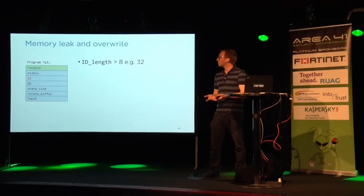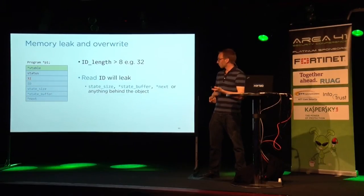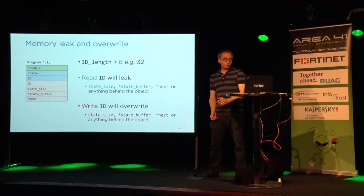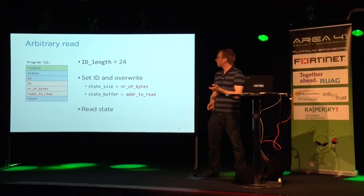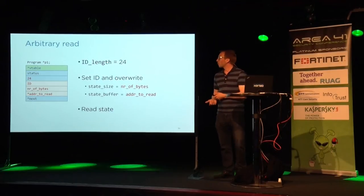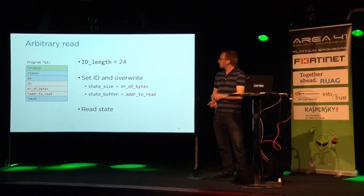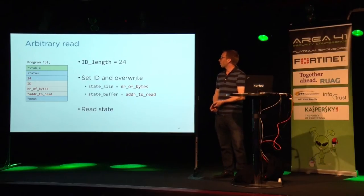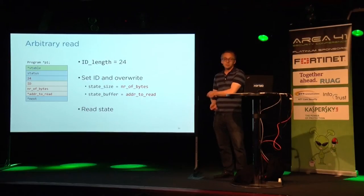How do we leak memory? We could set the ID length to 32, which would allow us to read and write the highlighted region. For an arbitrary read, we set ID length to 24, assign the number of bytes we want to read to state size, and assign the pointer we want to read to state buffer. Reading the state would then read our desired memory address.